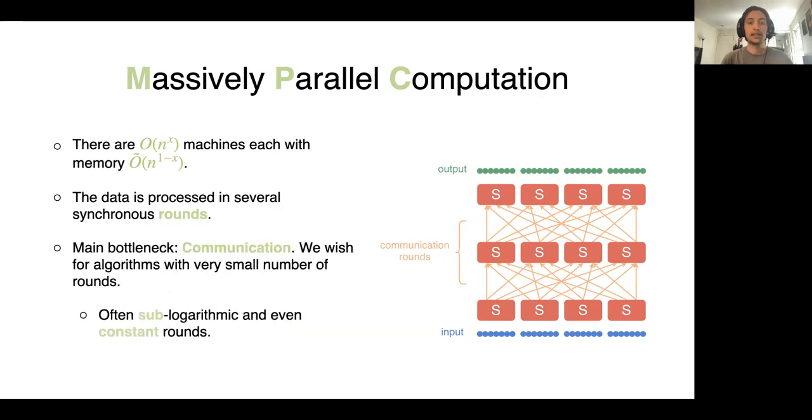In practice, the main bottleneck of massively parallel computations is its communication phase. So we naturally want to find algorithms that use a very small number of rounds, and we often can give sub-logarithmic and even constant round algorithms in this model.